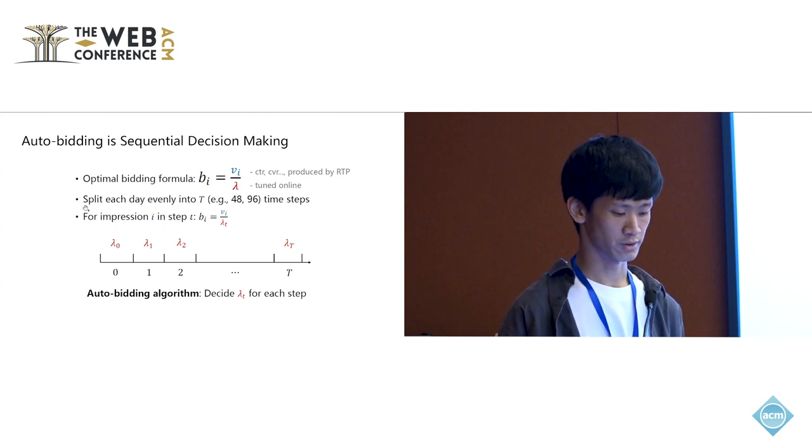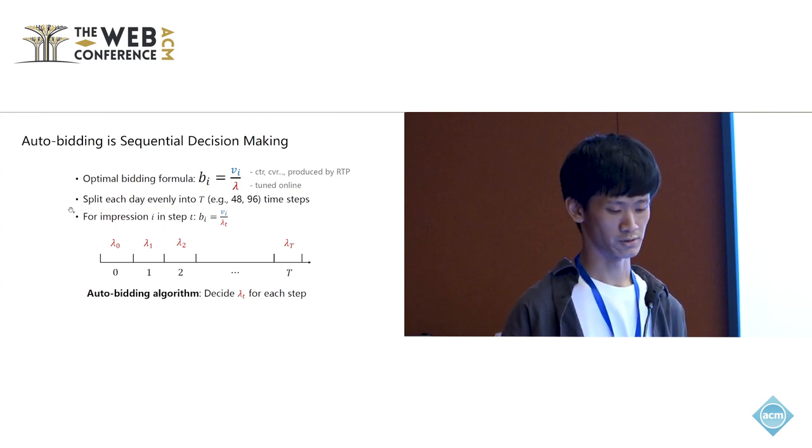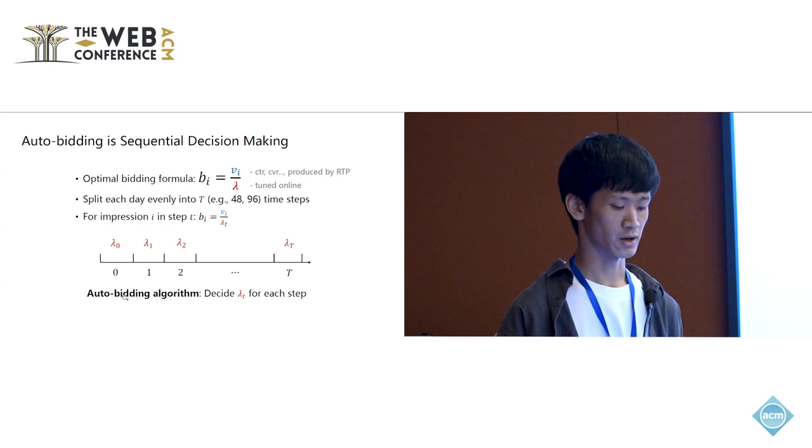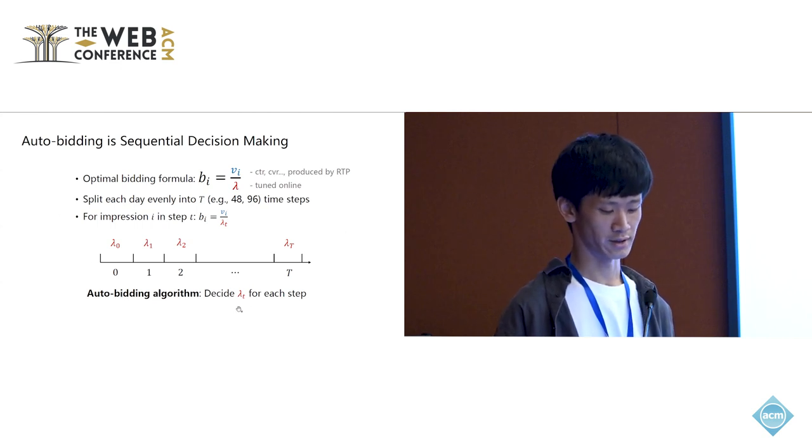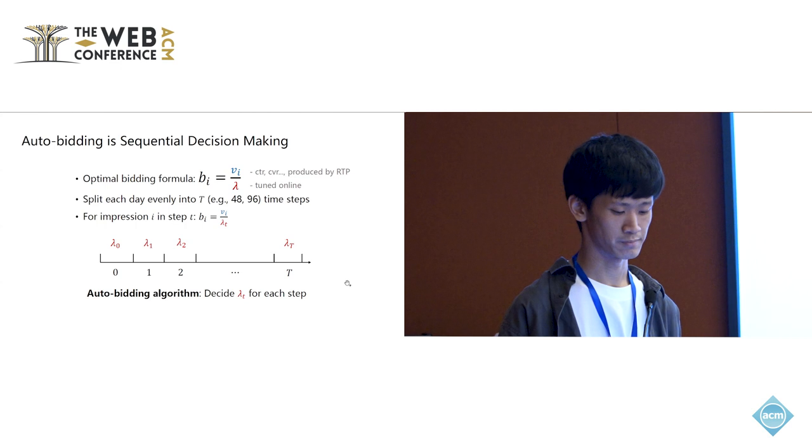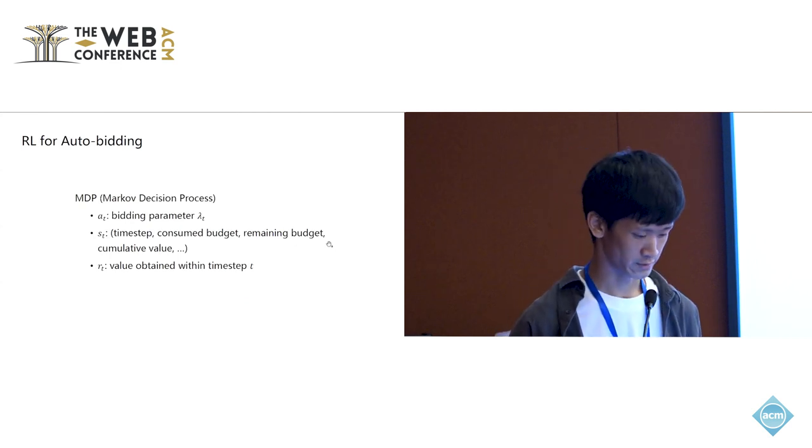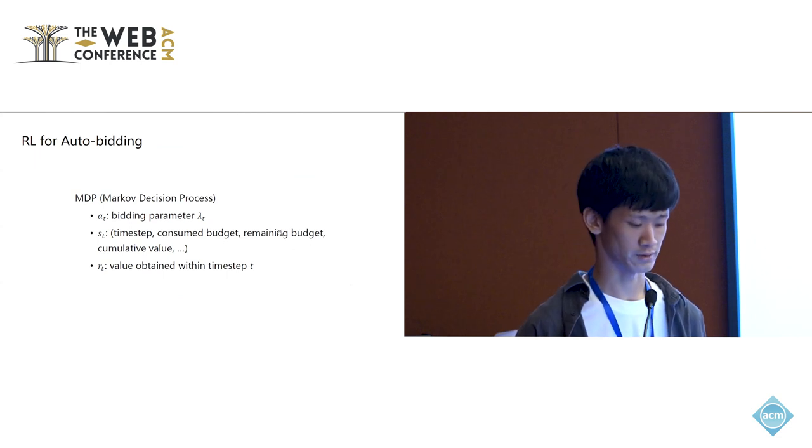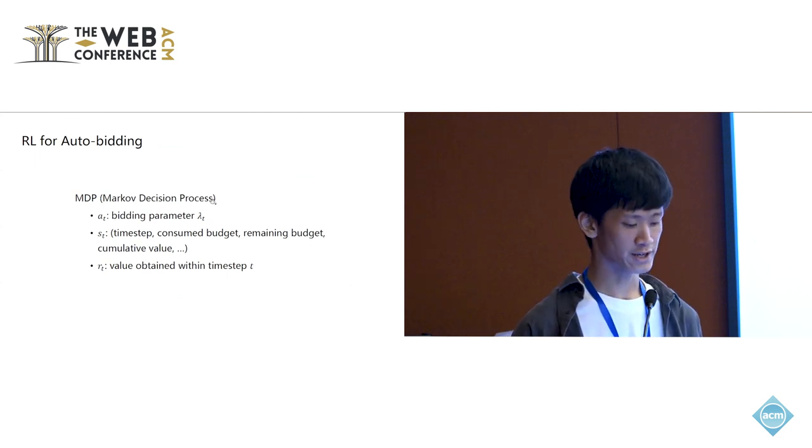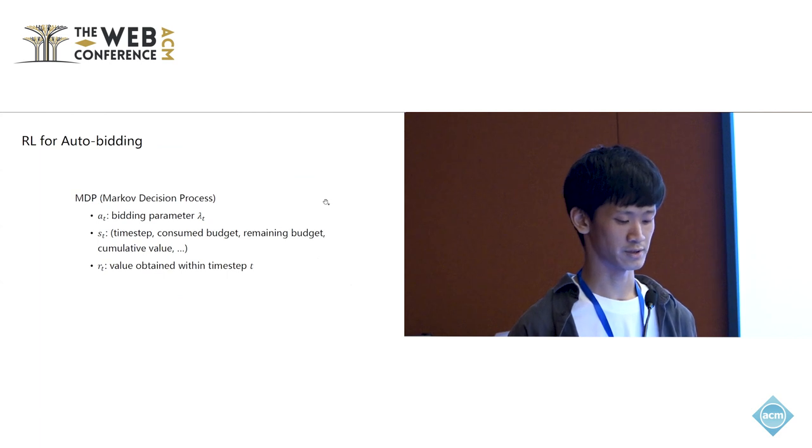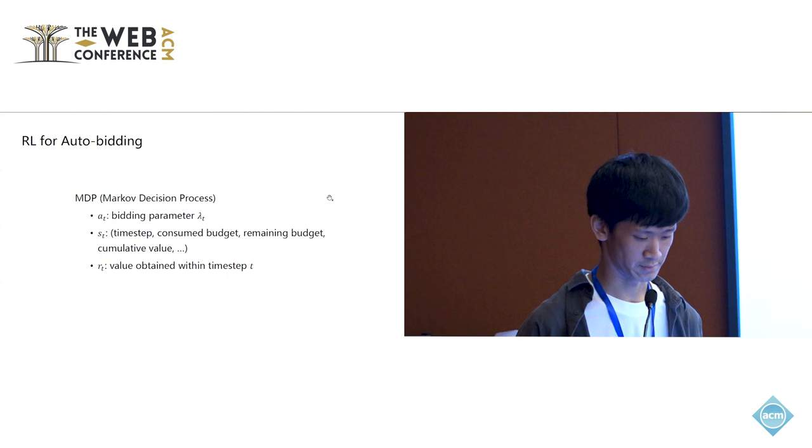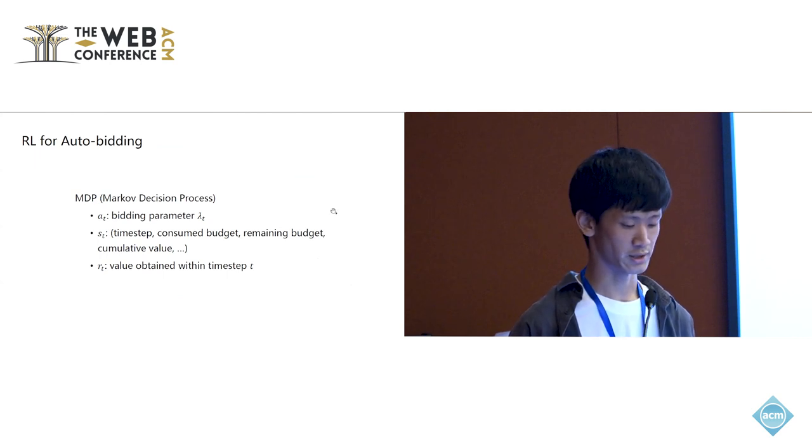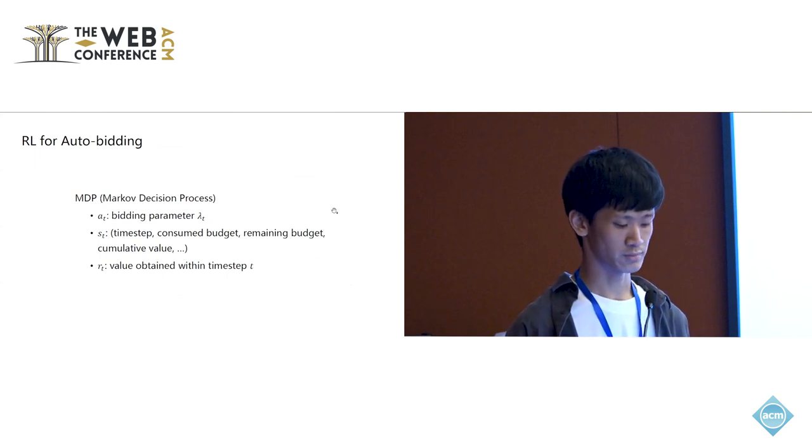A common approach is to split each day evenly into multiple time steps. And our auto-bidding algorithm is to decide this parameter lambda for each step. This can be formulated as a Markov decision process and can be solved via reinforcement learning approaches. Our action will be the bidding parameter lambda_t of this time step. Our state should contain information like time step, consumed budget, remaining budget, accumulated value. And our reward should be the total value that we obtain within the current time step.